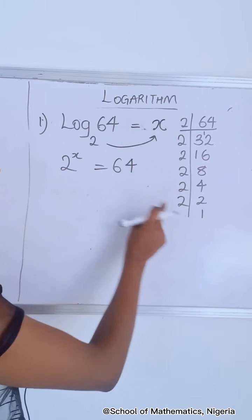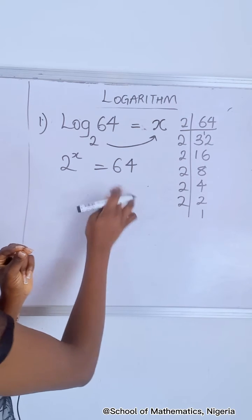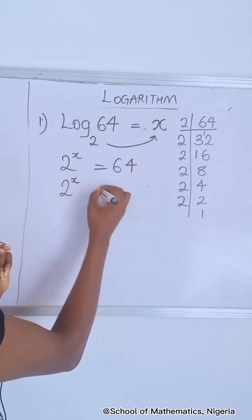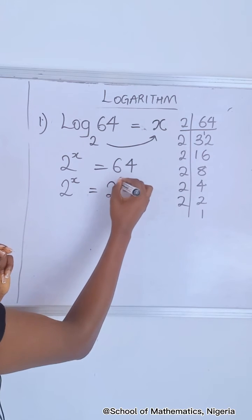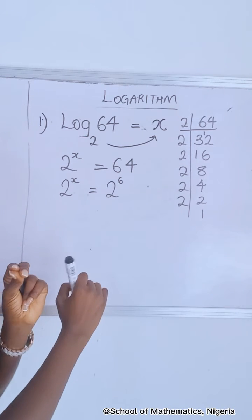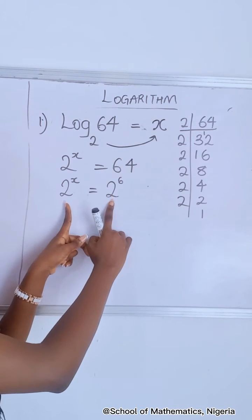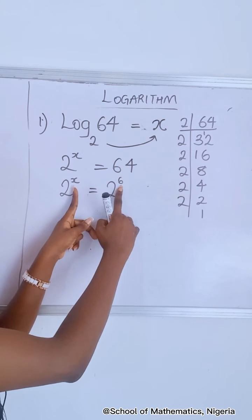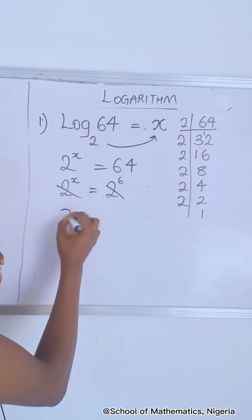So how many 2's do we have? 1, 2, 3, 4, 5, 6. So you multiply 2 six times to get 64. So you have 2 raised to the power of x and 2 raised to the power of 6. We do this because we want the bases to cancel so we can equate our exponents.